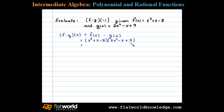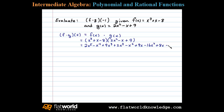Now here we can see we have a trinomial times a trinomial. Let's multiply: x cubed times 2x squared leaves us with 2x to the fifth; x cubed times negative x leaves us with minus x to the fourth; x cubed times 9 gives plus 9x cubed. Then distributing x: x times 2x squared gives plus 2x cubed; x times negative x is minus x squared; x times positive 9 gives plus 9x. Finally, negative 8 times 2x squared is negative 16x squared; negative 8 times negative x gives plus 8x; and negative 8 times positive 9 gives minus 72.